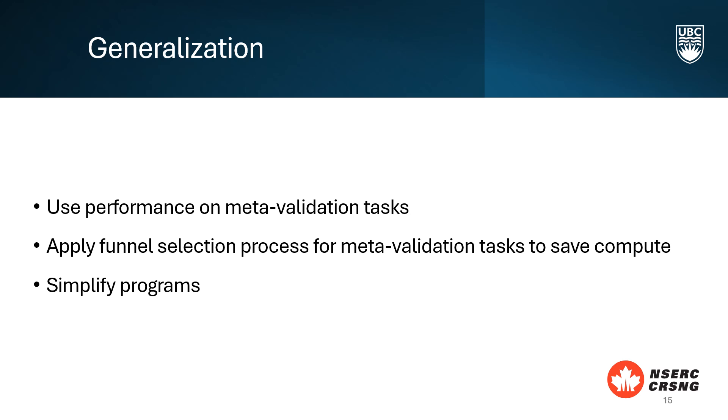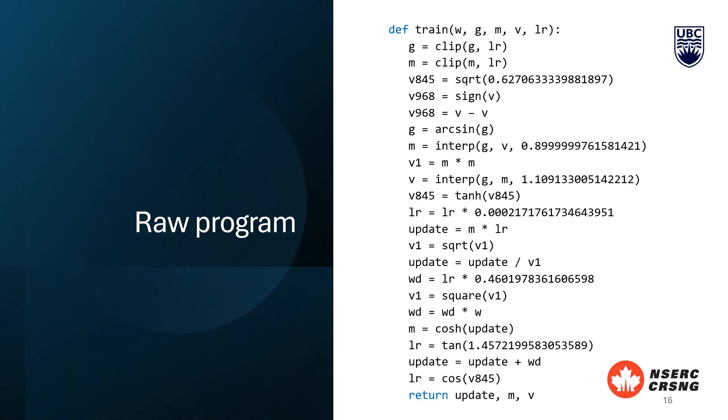Simpler programs are easier to understand and are more likely to generalize. Therefore, redundant or minimally impactful statements are removed and the programs are converted into their simplest mathematically equivalent form. This slide shows one state in the evolution of the LION optimizer. The program displayed represents an intermediate stage with redundant statements still present. It provides a glimpse into the program's complexity before the final optimization was applied.